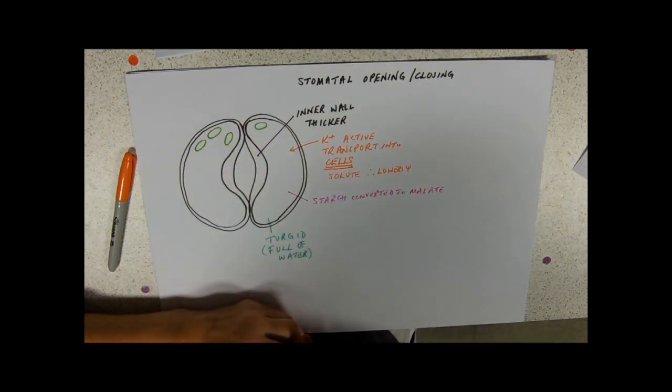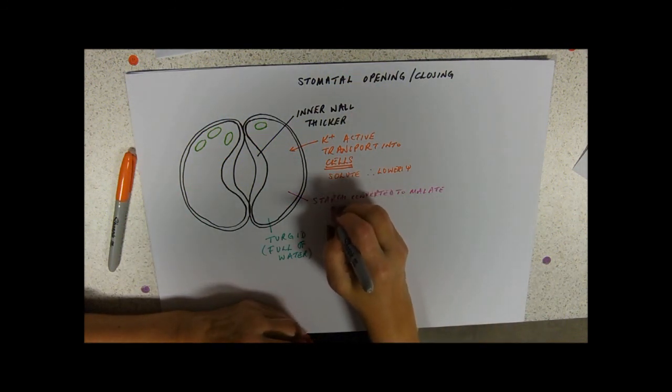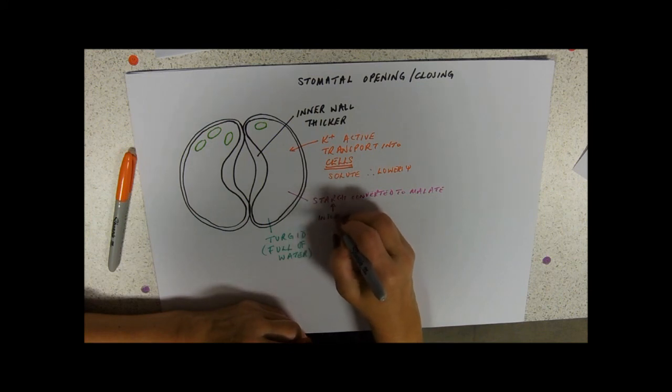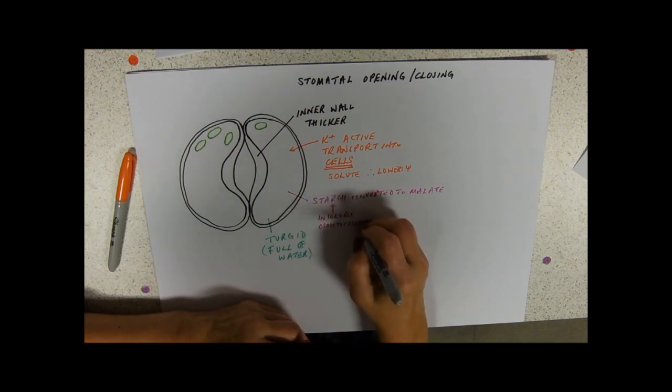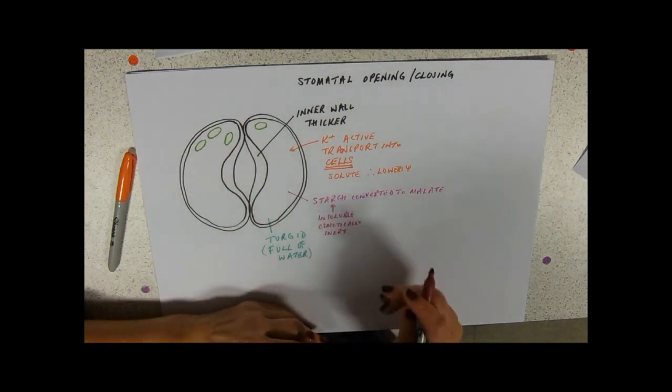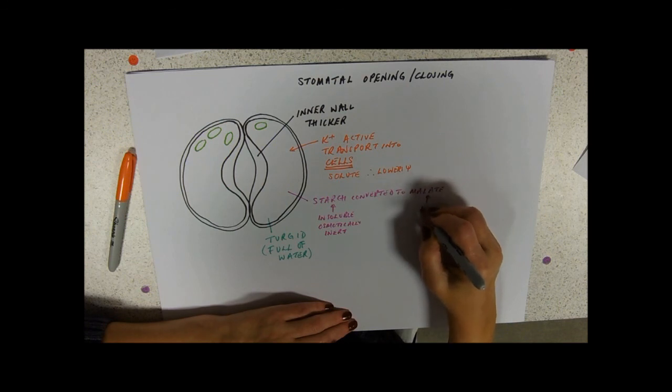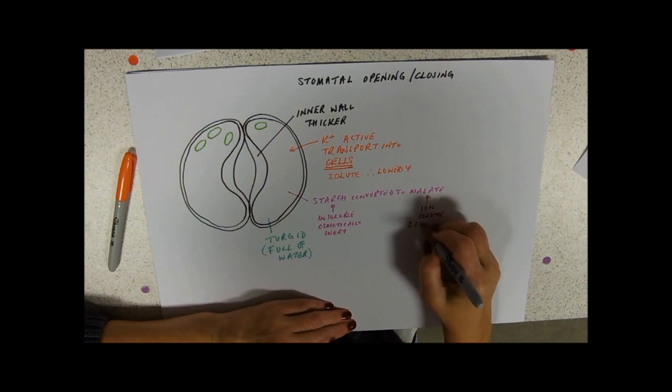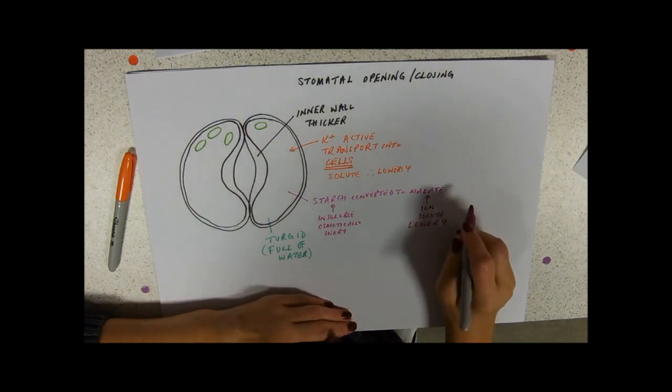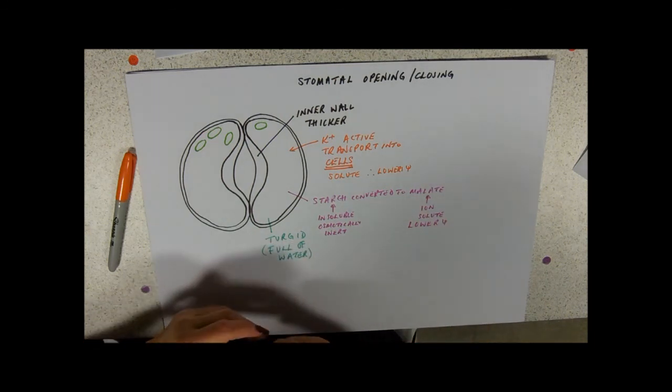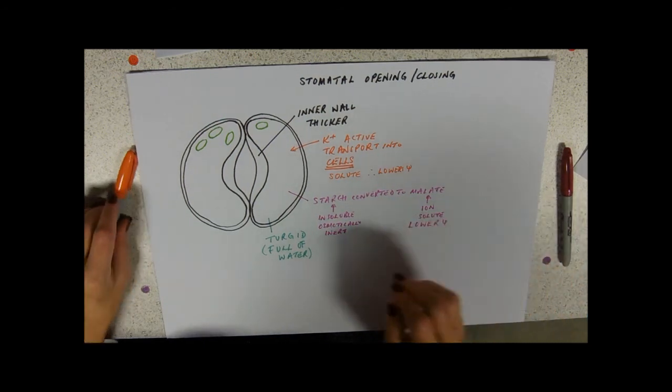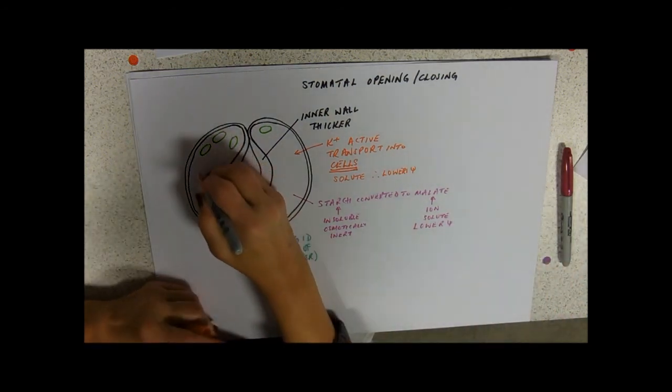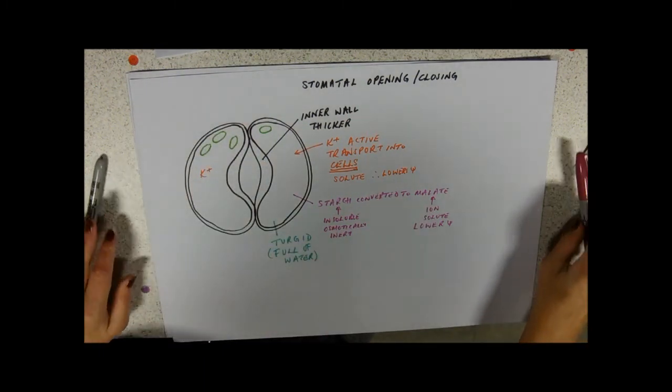Now what's the thing that we know about starch and storage? We know that starch is insoluble. I'm just going to describe it as osmotically inert because of that, it's not a solute so it's not going to lower water potential. But malate is an ion and it's a solute, so as the starch is made into malate it's going to lower the water potential of the cells. So here we are on our way to being turgid.